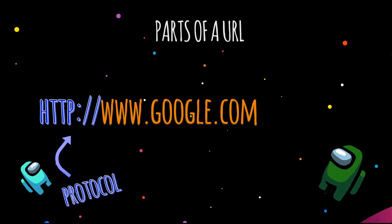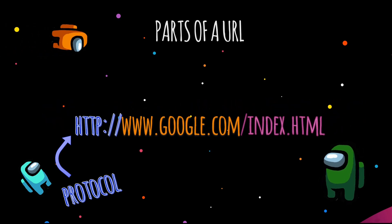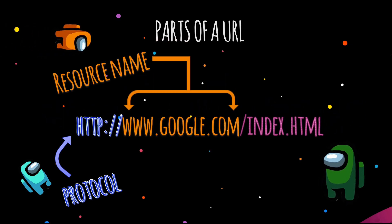Like www.google.com, you're actually telling your browser where to go. The first part, HTTP, is like a set of rules for talking to other computers. And the second part, like google.com, tells us exactly where to find what we're looking for.